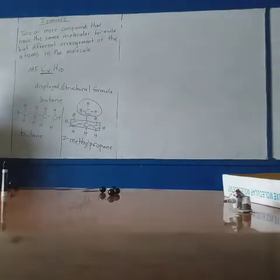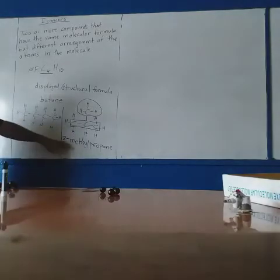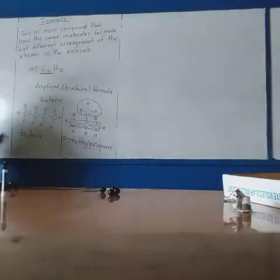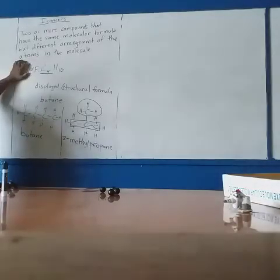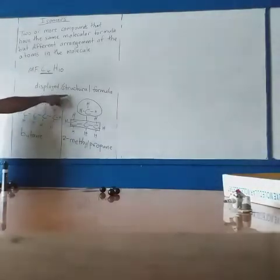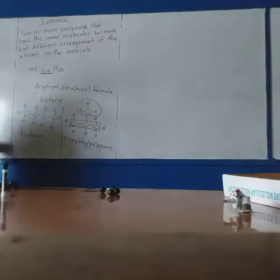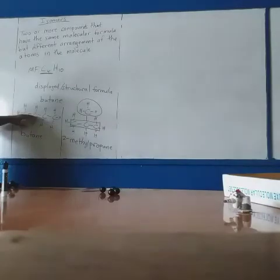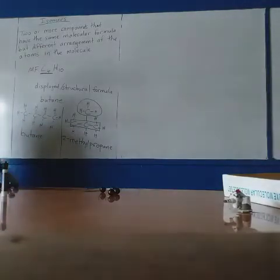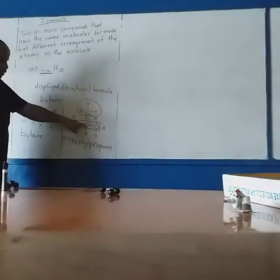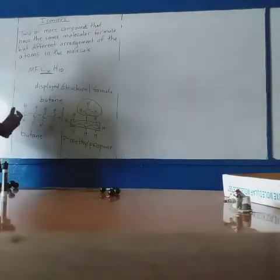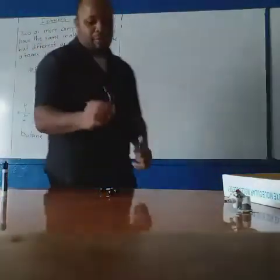Both compounds have the same number of carbons and the same number of hydrogens, meaning both of them have the same molecular formula C4H10. But obviously one compound is butane and the other is 2-methylpropane. Both of them are isomers because they have the same molecular formula, but as you can see the structural formula is different - meaning how the atoms are actually arranged in the molecule is different. In butane, all carbons are connected in one chain, but in the other, three carbons are in the chain and one is on the middle carbon.